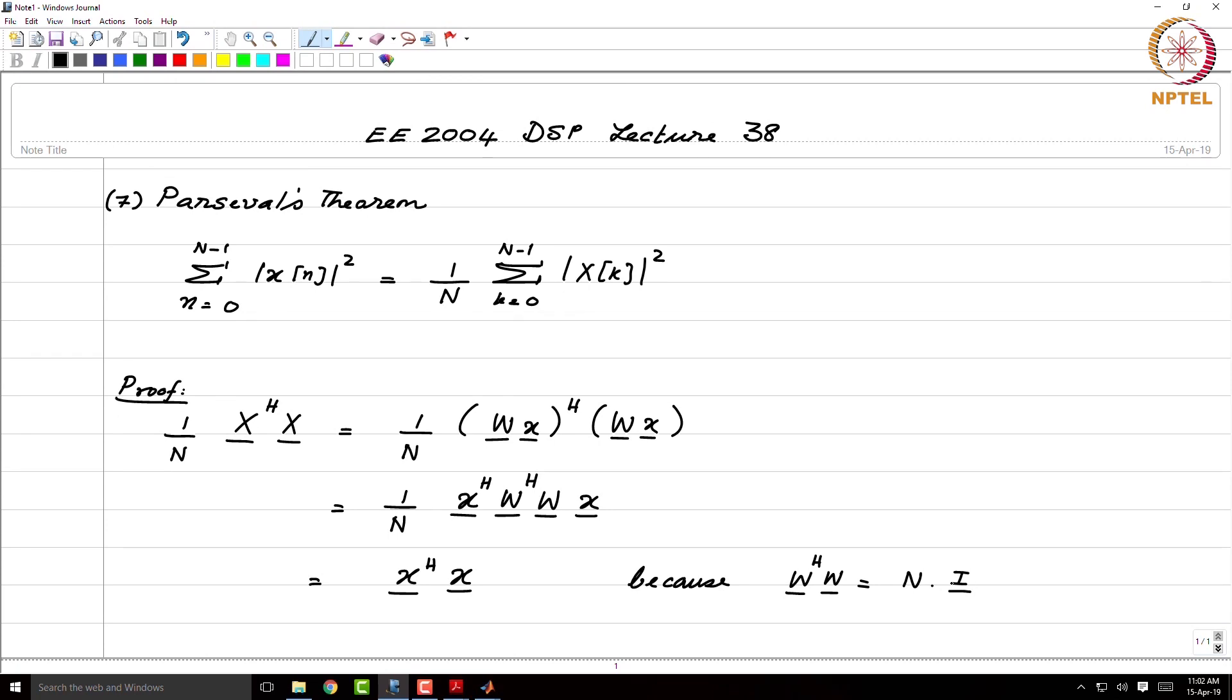Remember, W is the DFT matrix and it is made up of columns which have the form e to the j 2 pi k n by and these vectors are orthogonal.